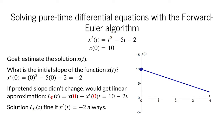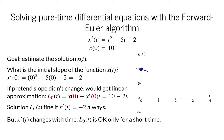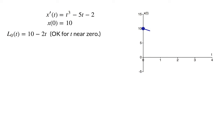We could claim that L0 of t is a good approximation to the solution if the derivative x prime of t stayed constant at negative 2 for all time, or at least didn't change much. However, if we look at the formula for x prime of t, it's pretty clear that x prime of t is not constantly negative 2 but instead changes to much different values. Since x of t is continuous, we can expect it to stay relatively close to negative 2 for a short amount of time.